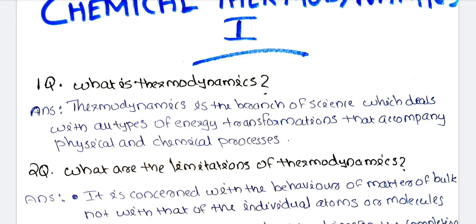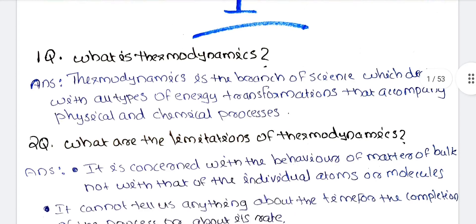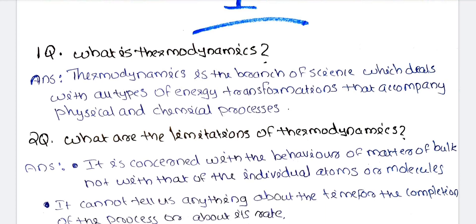We will discuss what is Thermodynamics. The definition of Thermodynamics is: it is a branch of science which deals with all types of energy transformations that accompany physical and chemical processes. That is, the branch of Thermodynamics deals with energy transformations, whether physical or chemical.